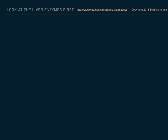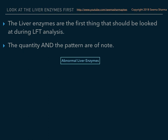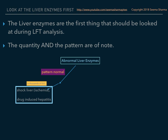The liver enzymes are the first thing that should be looked at during LFT analysis. The quantity and pattern of enzyme levels are both of note. If the pattern is normal but the numbers are elevated in the thousands, you're thinking shock liver or drug-induced hepatitis. If the numbers are between 400 and 1,000, you are likely dealing with acute viral hepatitis and will need to look further at the serologies.